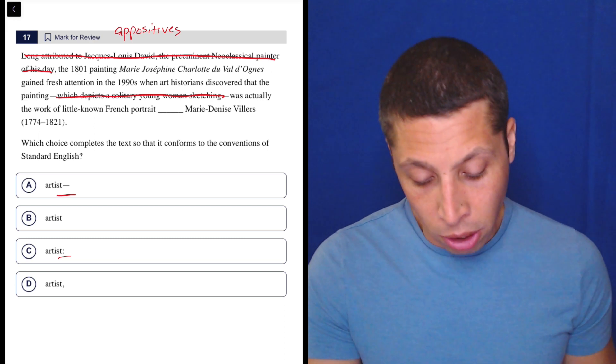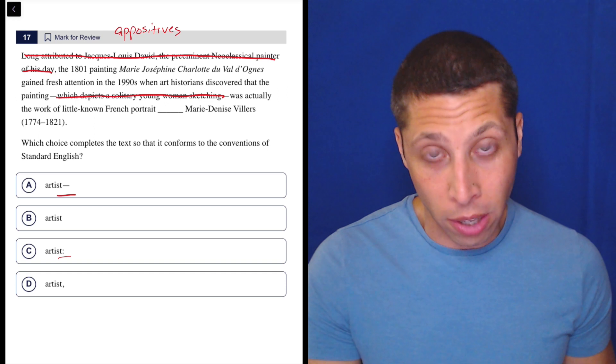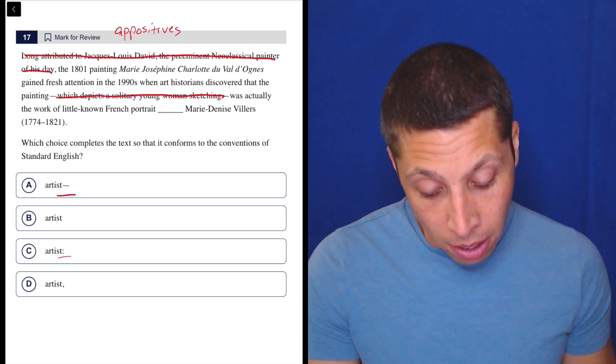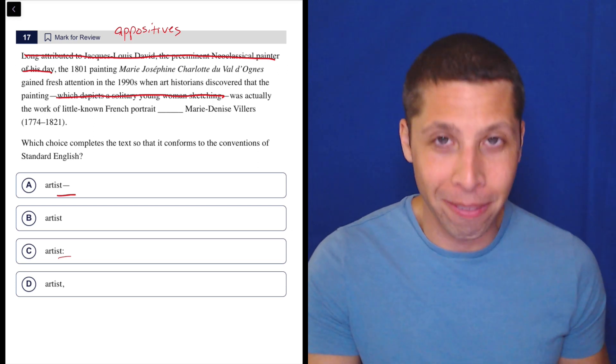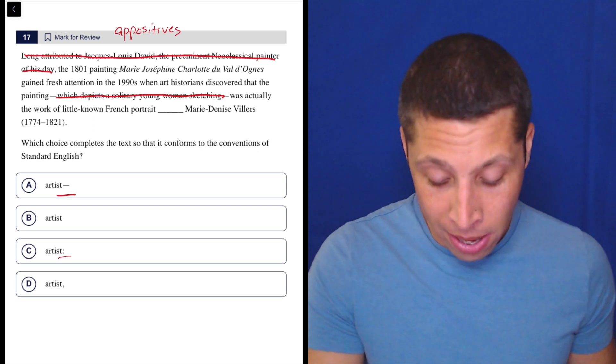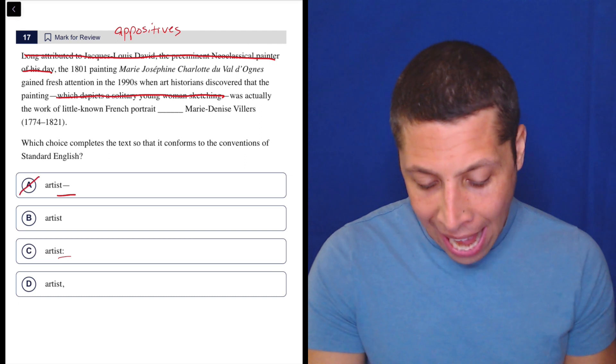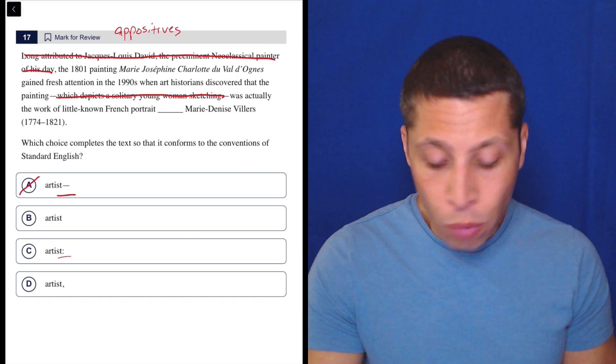So you can kind of see based on what I've crossed out, we've shortened the sentence quite a bit, but it has nothing to do with the sentence structure. Now that I look at it, I knew this beforehand, but I would have discovered this now, is that we don't want a dash because we've already got the two dashes. That would be very, very confusing.